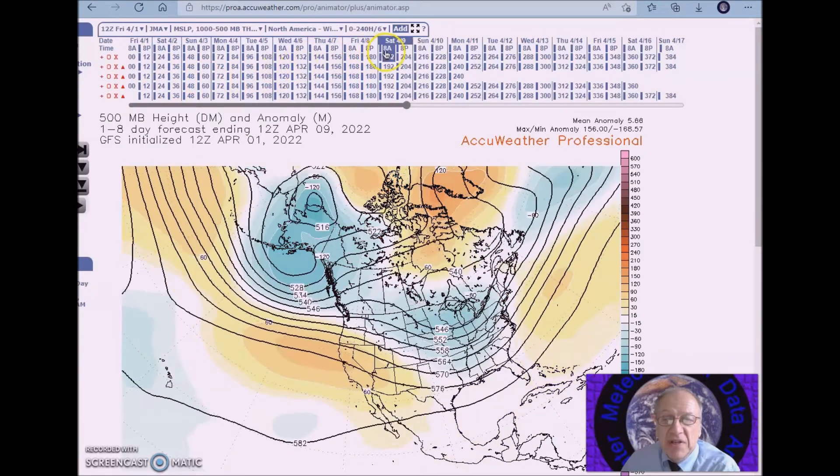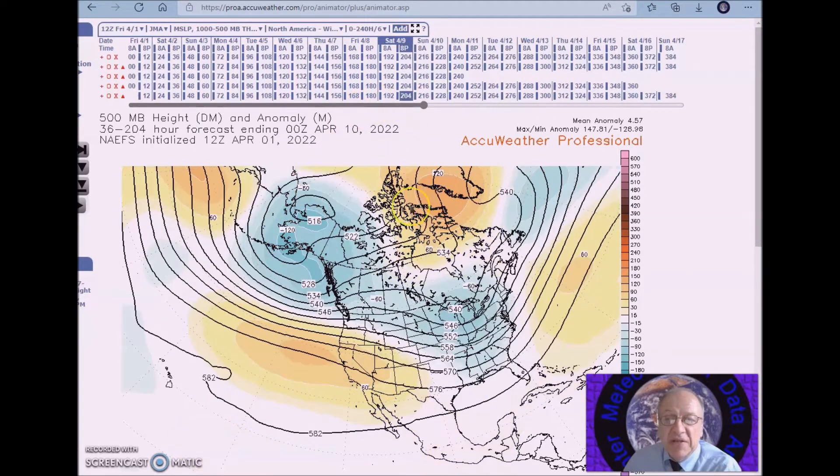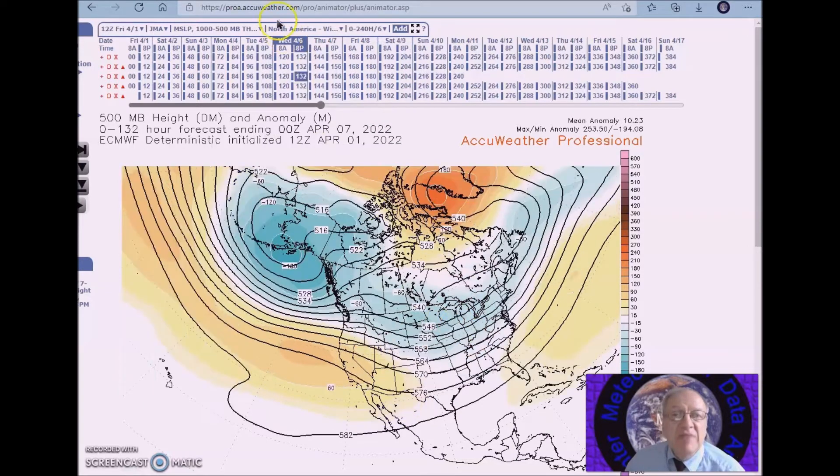That occurs as this ridge builds into the west. We have an upper low here over Alaska and above normal heights across the high latitudes of the North Atlantic. This will result in a trough here in the east. Now we will have a closed low.